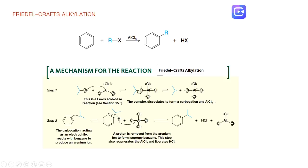This complex will dissociate to form a carbocation and tetrachloroaluminum. The carbocation is electrophilic, so it will be attacked by a nucleophile, and the nucleophile in this reaction is the aromatic ring.